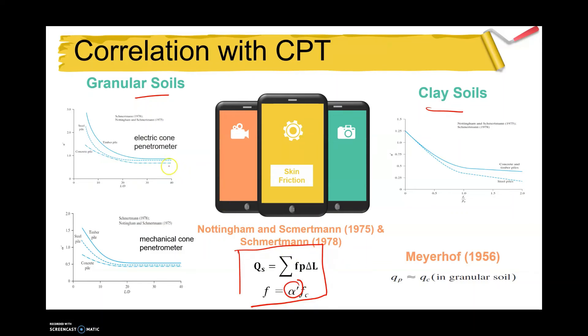In order to determine alpha prime, you need to refer to this graph—this is for electric cone and this one for mechanical cone. This graph is for clay soil. You need the ratio of fc over pa to get the alpha value. Meanwhile, for this one you need the ratio of L over D.